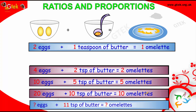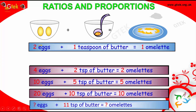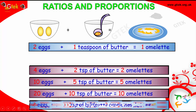Now, 11 teaspoons of butter. With 1 teaspoon you make 1 omelette using 2 eggs. For 11 teaspoons, the multiple is 11: 2 into 11 is 22 eggs, and 1 into 11 is 11 omelettes.